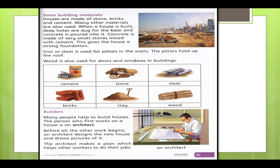Many people help to build houses. The person who first works on a house is an architect. Before all the work begins, an architect designs the new house and draws pictures of it. The architect makes a plan which helps other workers to do their jobs. The architect is basically a designer and planner who makes a picture of how to make a house. After that, the rest of the workers start working on the plans.